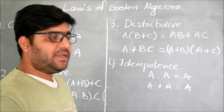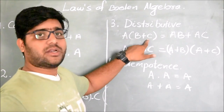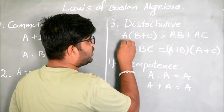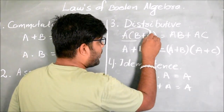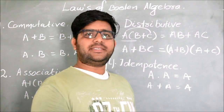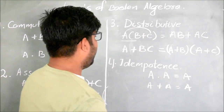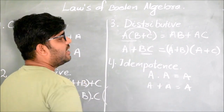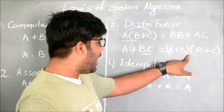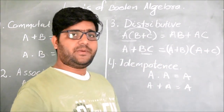The third one is the Distributive Law. Distributive Law says when A AND (B OR C), that can be written as (A AND B) OR (A AND C). Note that 'AND' and 'OR' here are logical operators, not the English words. Likewise, when A OR (B AND C), this can be written as (A OR B) AND (A OR C). This is called the Distributive Law.